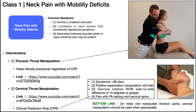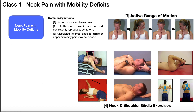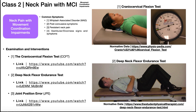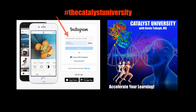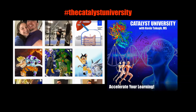In general, for neck pain with mobility deficits: thoracic thrust manipulations are great, cervical manipulations are great — and for acute wry neck specifically, the cervical manipulation is probably the way to go. Combine these with therapeutic exercises like active range of motion and neck and shoulder girdle strengthening. Hopefully this video gave you a good understanding of class one of the neck pain classification system. In the next video, we'll be discussing class two: neck pain with movement coordination impairments. Make sure to join us — thanks for tuning in. Please like, subscribe, and check out my Instagram.